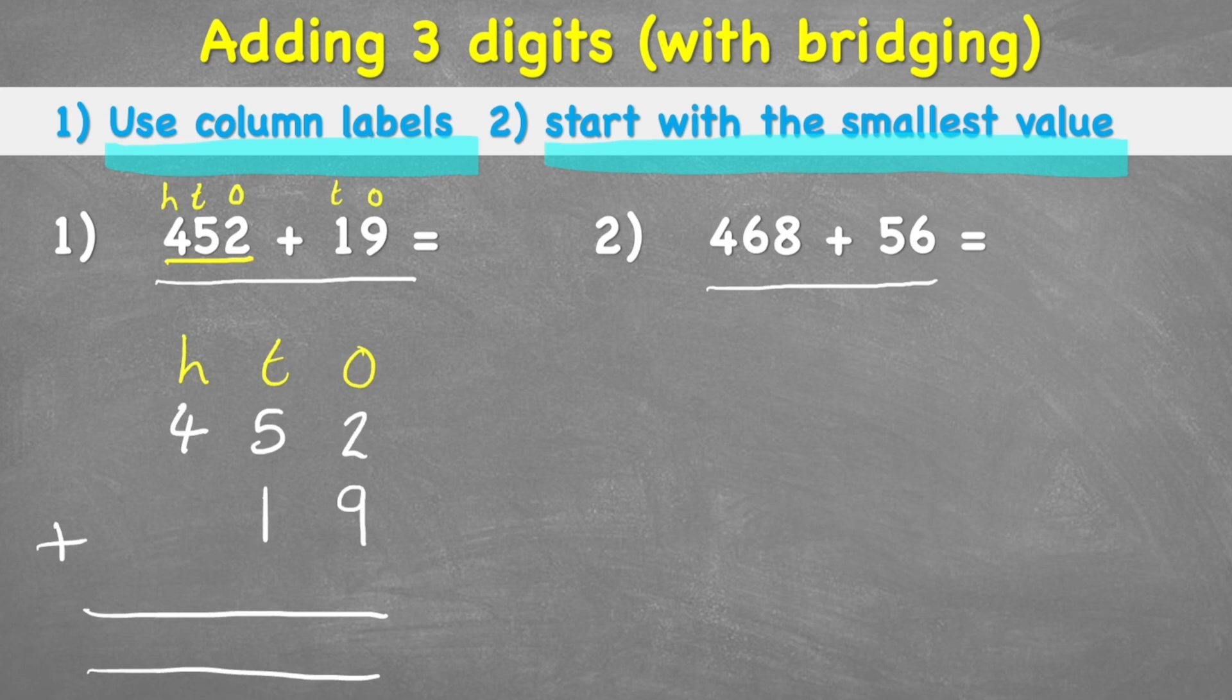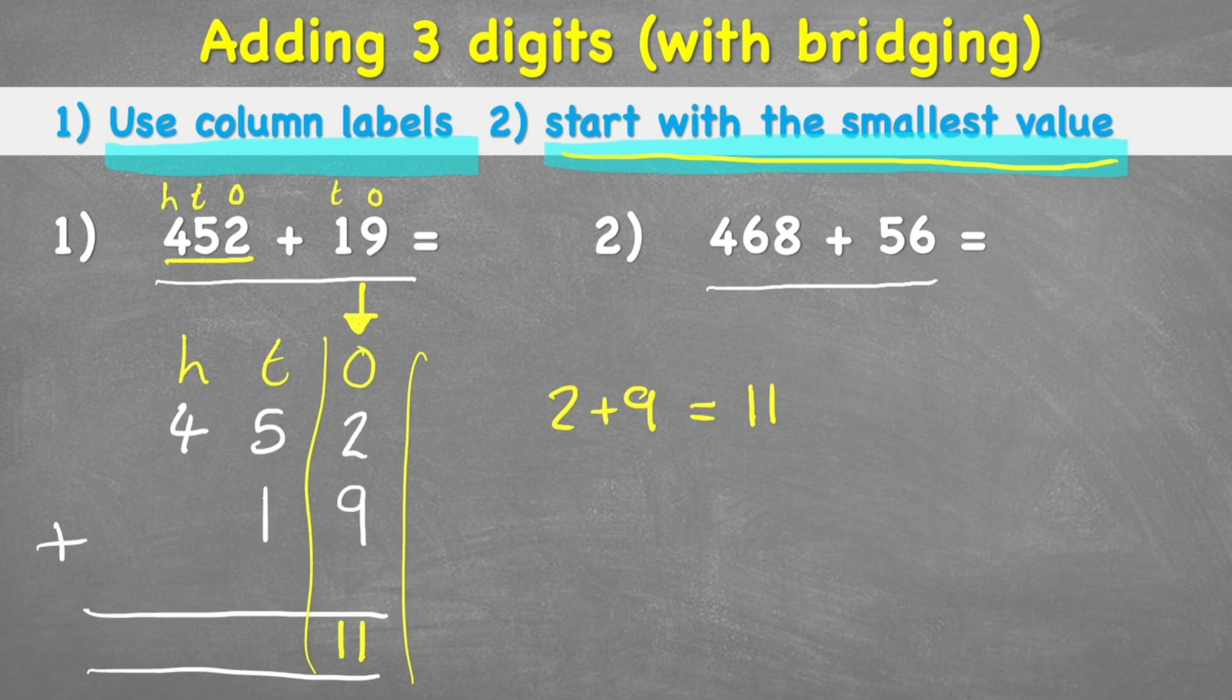The second tip was start with the smallest value. The smallest value will be my ones in this case, so I'm going to start by adding up my ones. I have two add nine. Well, two add nine equals eleven. I don't want to put eleven down here because this column is only supposed to have one digit in it, and obviously eleven is a two-digit number.